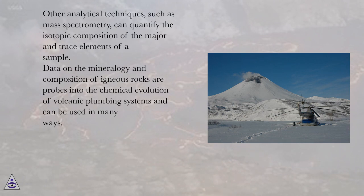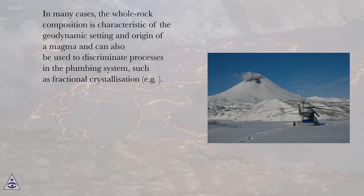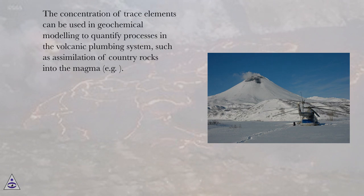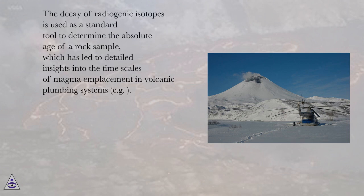Data on the mineralogy and composition of igneous rocks are probes into the chemical evolution of volcanic plumbing systems. In many cases, the whole-rock composition is characteristic of the geodynamic setting and origin of the magma and can be used to discriminate processes in the plumbing system, such as fractional crystallization. The concentration of trace elements can be used in geochemical modeling to quantify processes such as assimilation of country rocks into the magma. The decay of radiogenic isotopes is used as a standard tool to determine the absolute age of a rock sample, which has led to detailed insights into the timescales of magma emplacement.